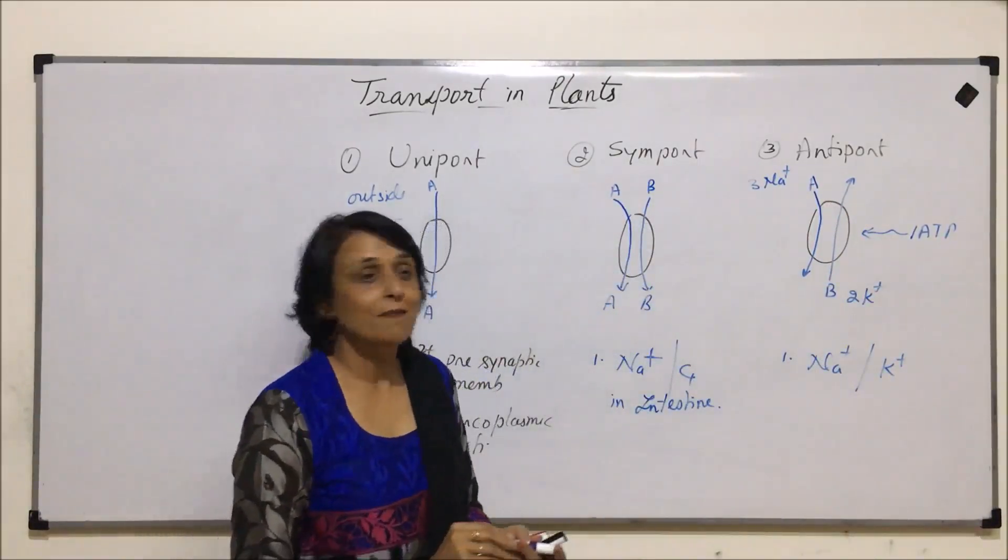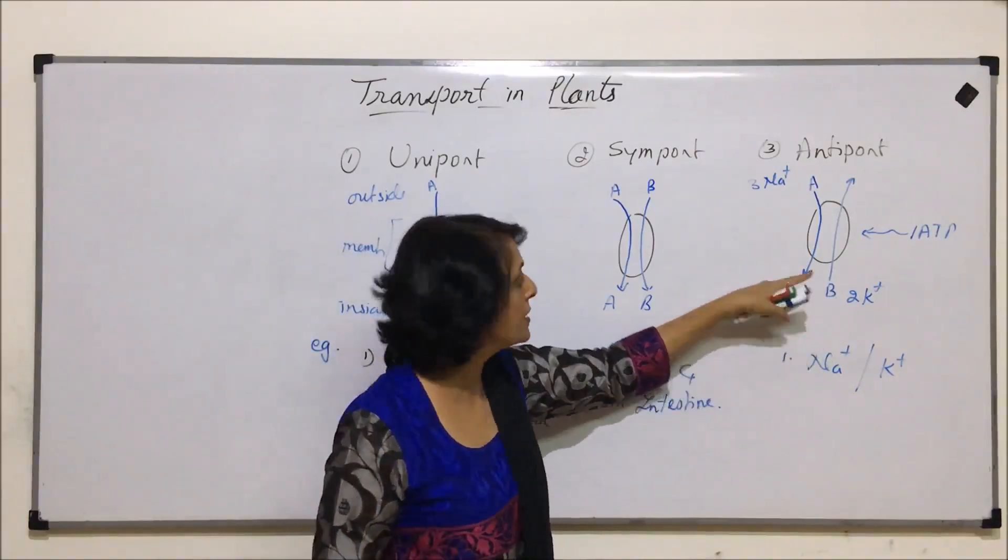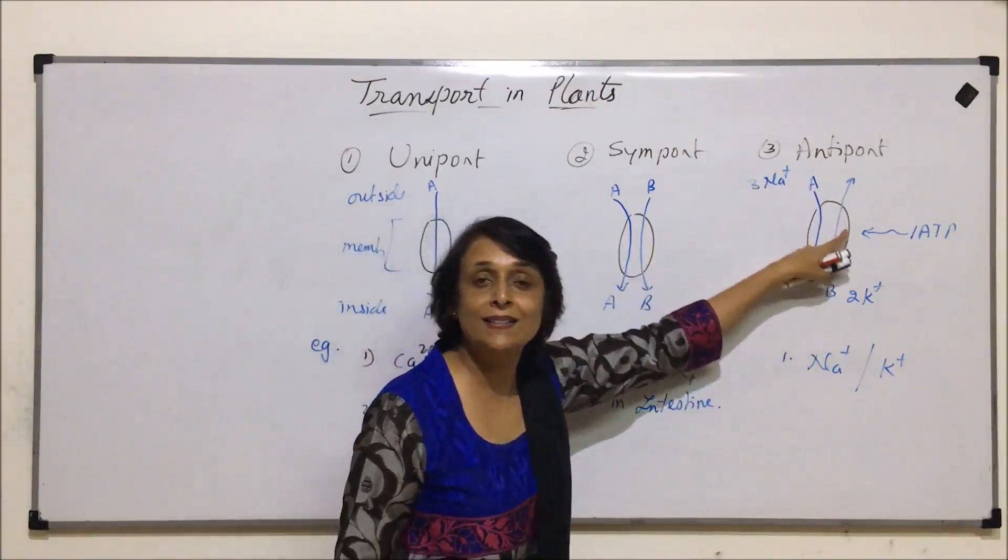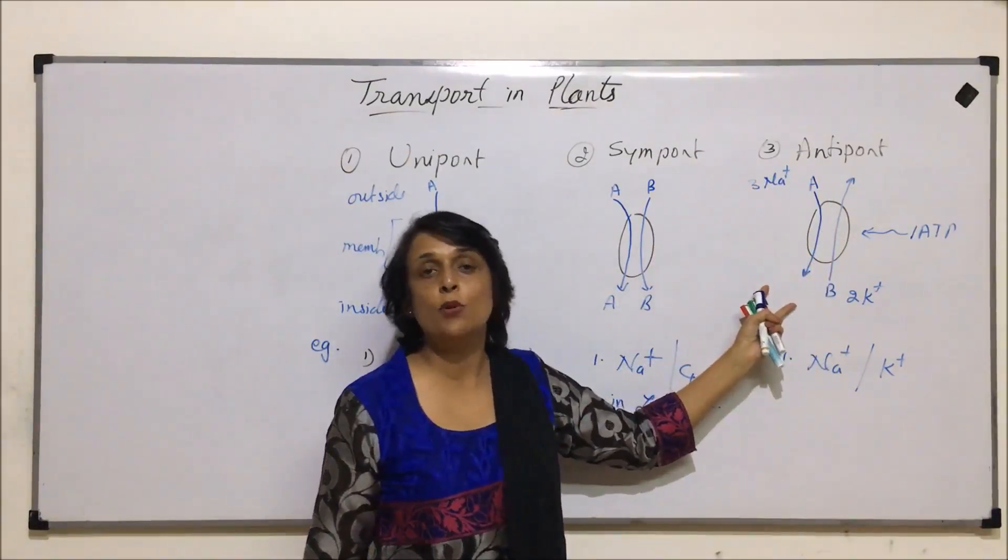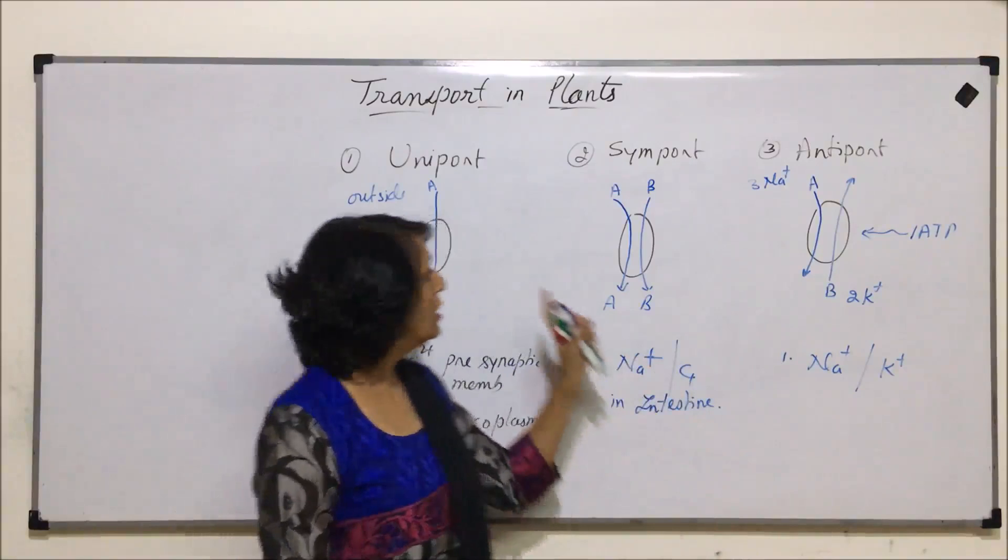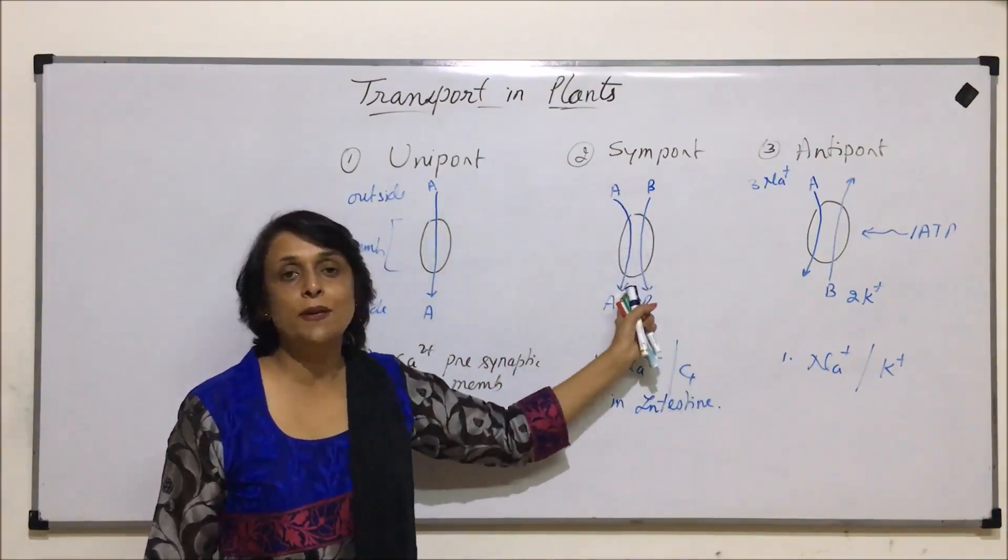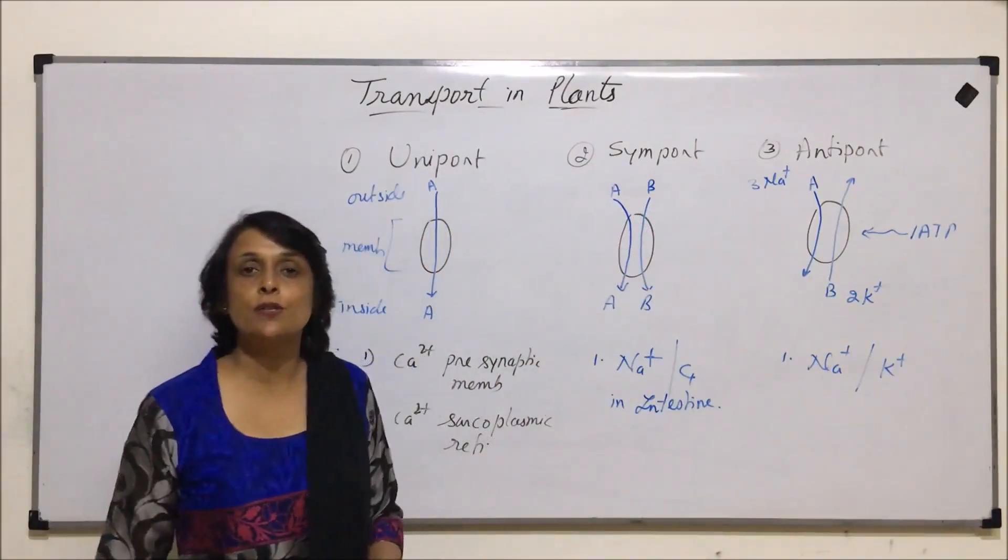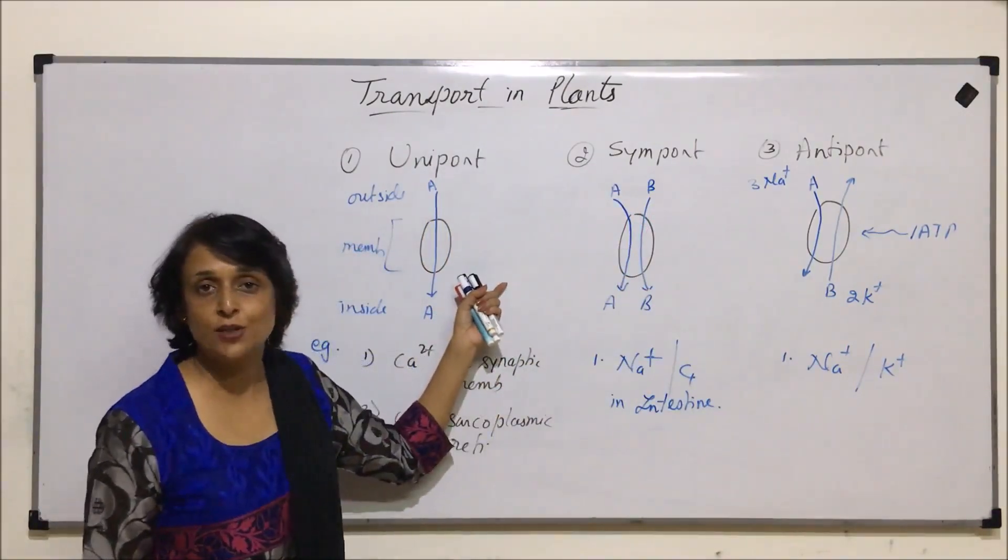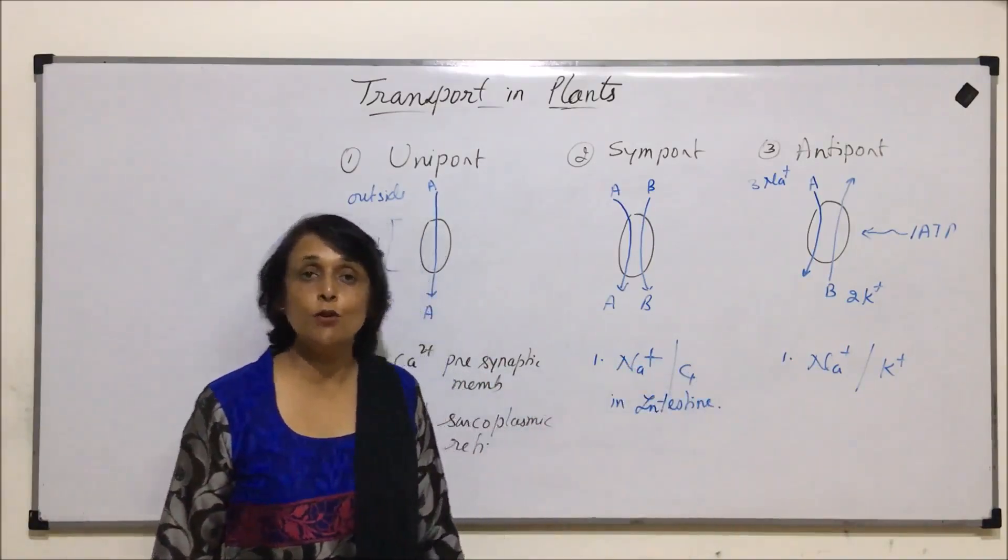So it is the same protein which is transporting or helping in the transport of two substances. One is going out, the other is coming in. So two particles getting transported in opposite direction. So uniport, symport, and antiport: proteins helping in transport, and depending upon the direction in which this transport is taking place, this classification is done. And these are the important examples which we have to remember.